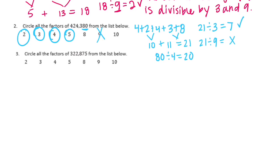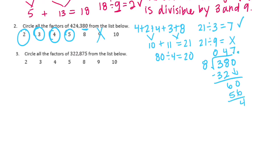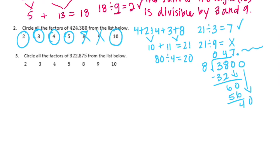For 8, we check if the last three digits are divisible by 8. So 380 divided by 8 — 8 can't go into 3, but it can go into 38. 8 times 4 is 32, 8 times 5 is 40, so it can go in 4 times. We get a remainder and would have to continue past the decimal point, so it is not divisible by 8. For 10, the divisibility test is it just needs to end in a 0, which it does, so it's divisible by 10.